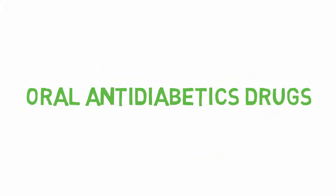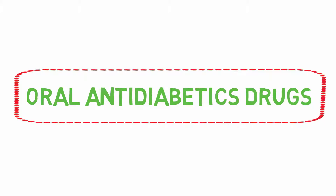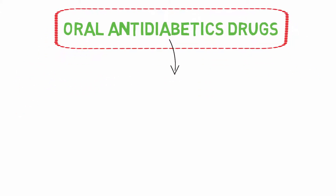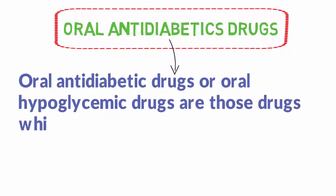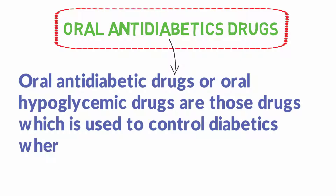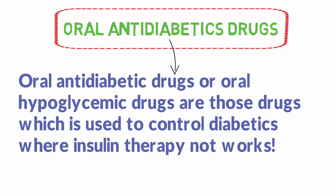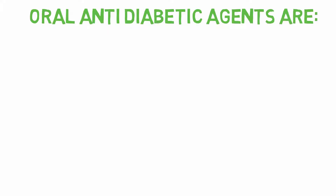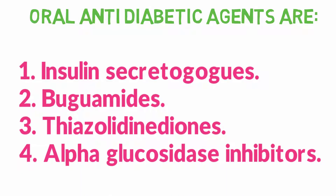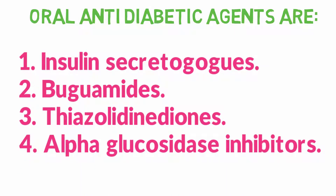Today we will discuss oral antidiabetic drugs. Oral antidiabetic drugs, or oral hypoglycemic drugs, are those drugs which are used to control diabetes where higher insulin therapy does not work. Oral antidiabetic drugs include insulin secretagogues, biguanides, thiazolidinediones, and alpha-glucosidase inhibitors.